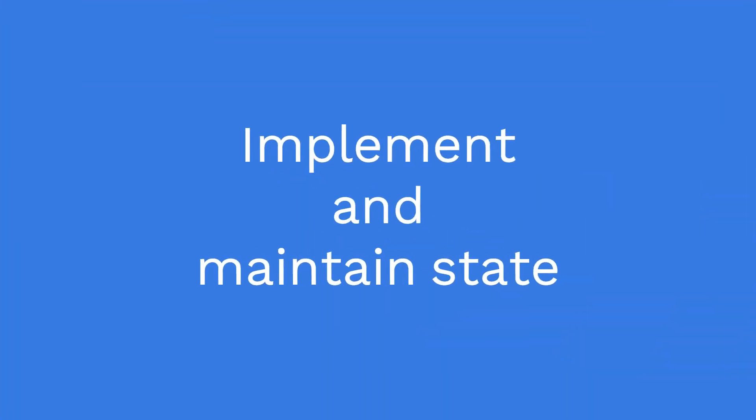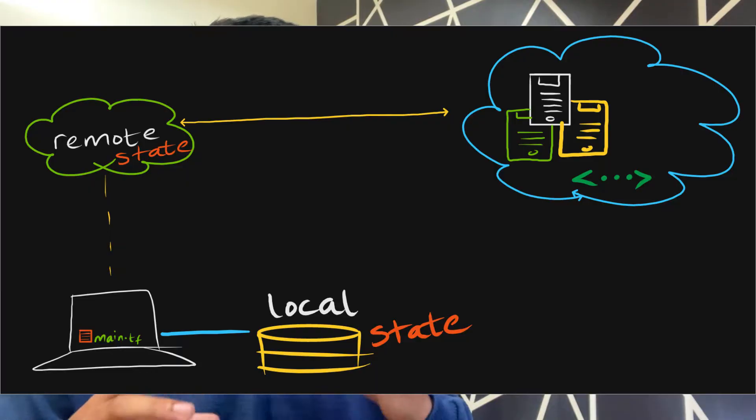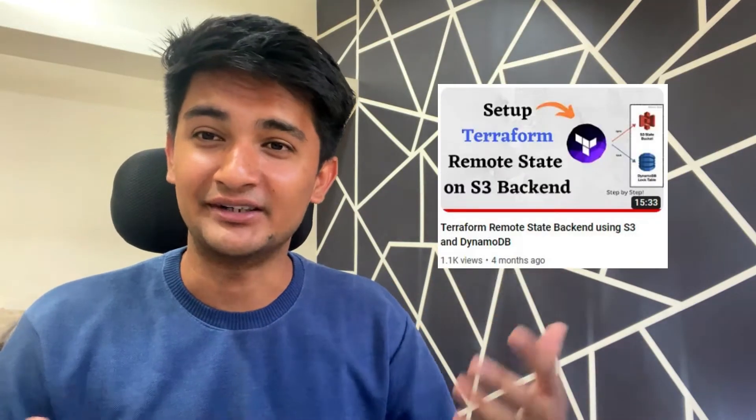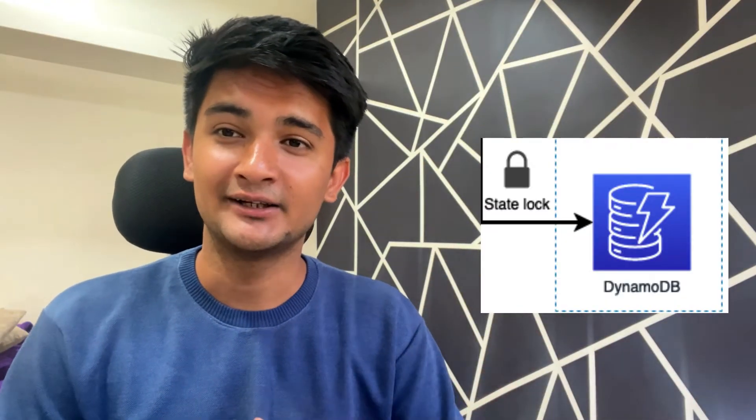Number seven is implement and maintain state. Here you need to understand how to work with state: what is local backend, what is remote state backend, and how you can store your Terraform state in a remote state backend like S3 or other backend options. You also need to know what is state locking and how to configure it.